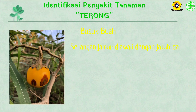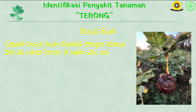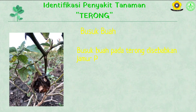Serangan jamur diawali dengan jatuh dan melekatnya konidia pada jaringan inang. Pada kondisi yang sesuai, konidia akan berkecambah dan membentuk tabung infeksi yang digunakan untuk menembus jaringan inang. Gejala busuk buah ditandai dengan adanya bercak coklat berair di salah satu sisi tanaman terong. Lama-kelamaan bercak tersebut terus melebar dan buah yang diserang akan mengalami busuk menyeluruh serta rontok. Busuk buah pada terong disebabkan jamur Phytophthora sp., dengan gejala adanya bercak-bercak coklat kebasahan pada buah.